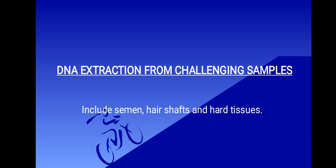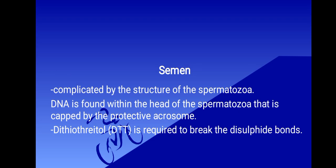However, some sample types require variations on the basic techniques. The first sample type we want to look at is semen. Semen is one of the most commonly encountered types of biological evidence — it's found in cases of rape, etc. The extraction of DNA from spermatozoa is complicated by the structure of the spermatozoa itself.